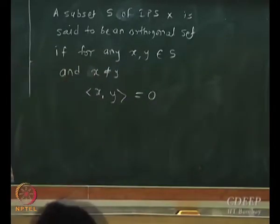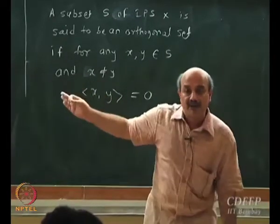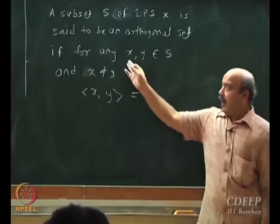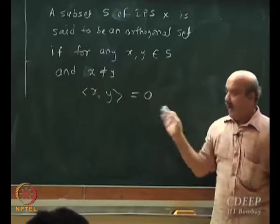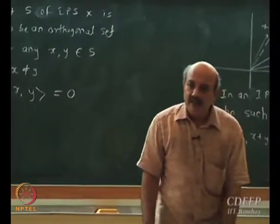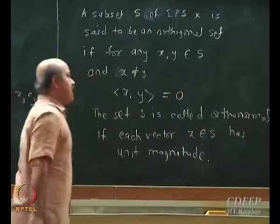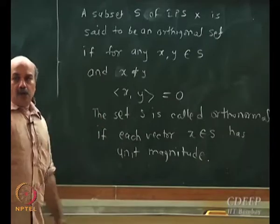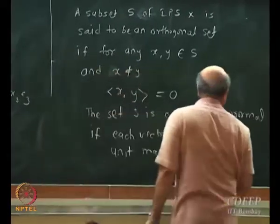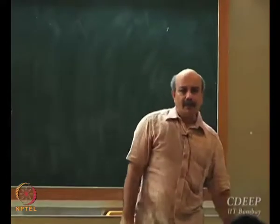In three dimensions, i, j, k form a set of orthonormal vectors. In an inner product space, if I give you a set where the inner product of any two elements is zero, that set is an orthogonal set. If each element also has unit magnitude, it is an orthonormal set.